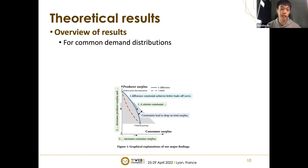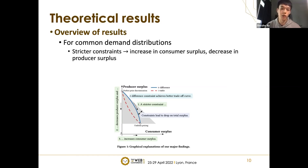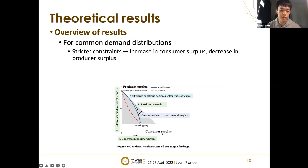With theoretical analysis, we study the welfare implications of these two proposed policies. Our main theoretical results are threefold, with a graphical explanation shown in this figure. Firstly, for common demand distributions, we prove that stricter constraints lead to an increase in consumer surplus and a decrease in producer surplus. The upper left point represents perfect price discrimination (no regulation), the bottom point represents the strictest regulation (uniform pricing). As regulatory intensity increases, consumer surplus increases and producer surplus decreases.